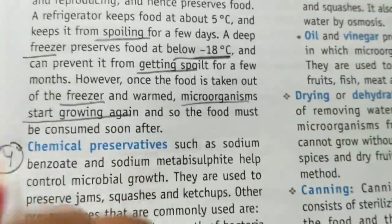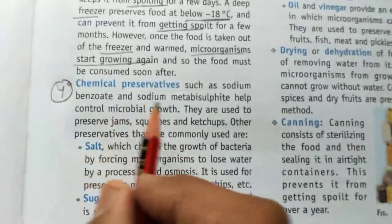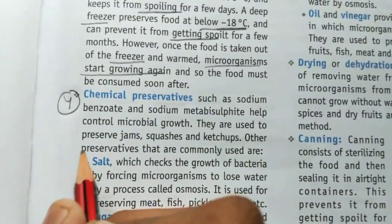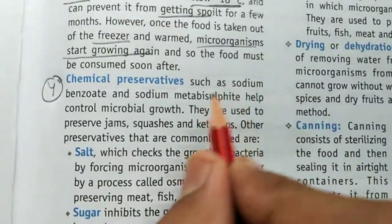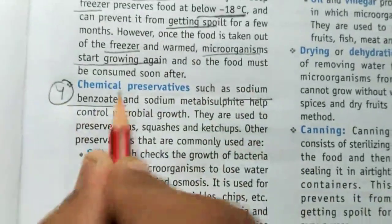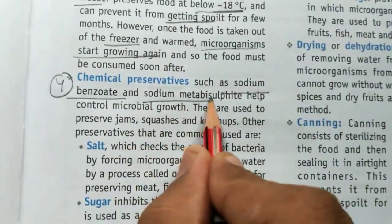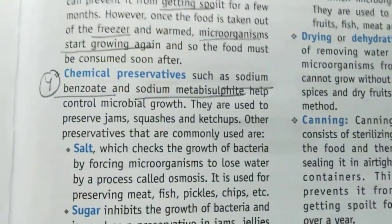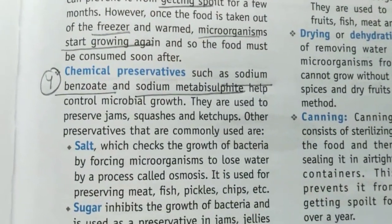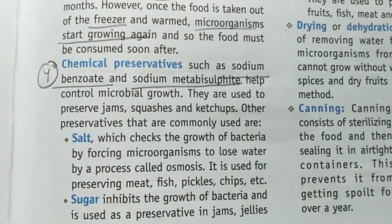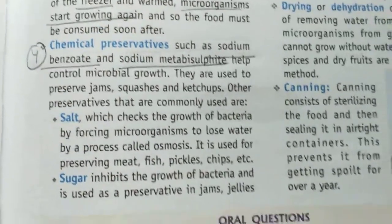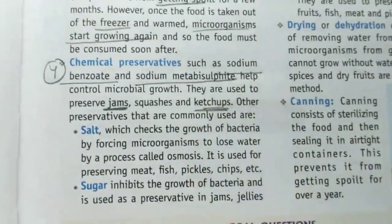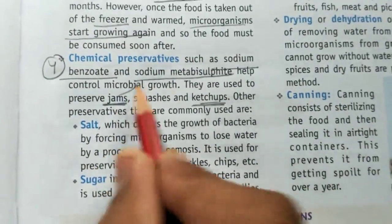The fourth method is chemical preservatives. Some chemicals are used to prevent the growth of microorganisms — sodium benzoate and sodium metabisulfite are two such chemicals used in the preservation of food in jams and ketchups.